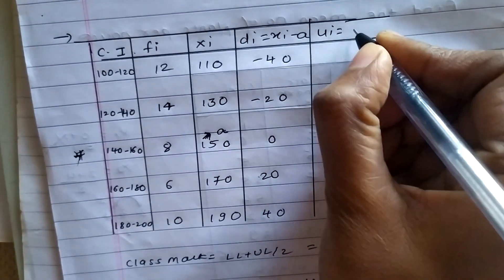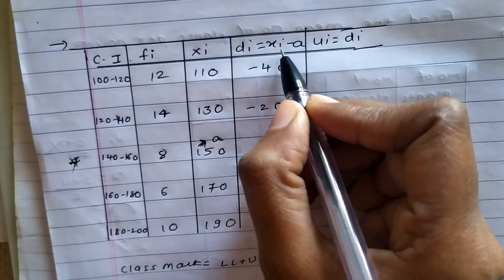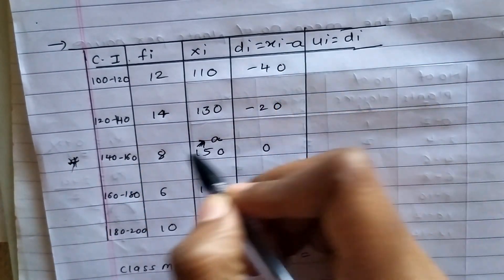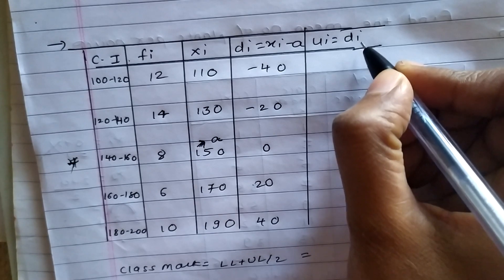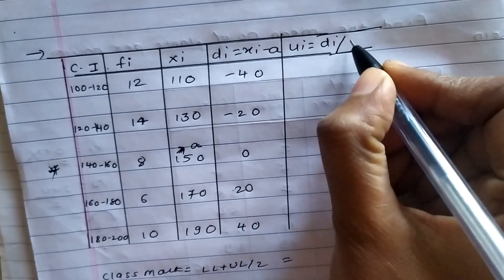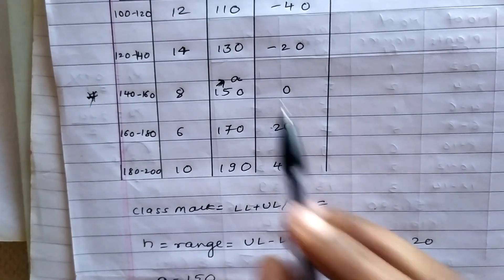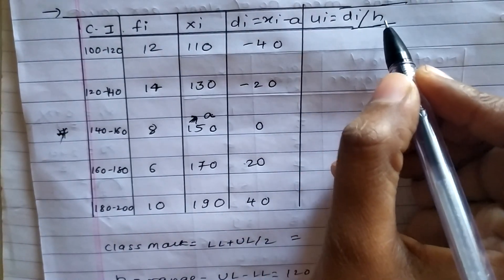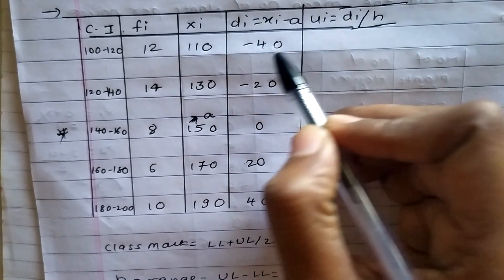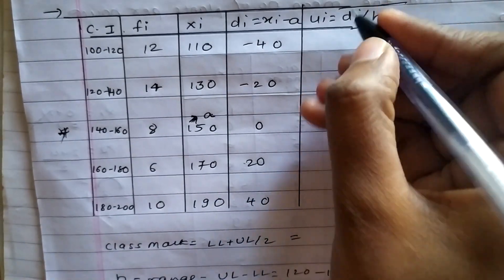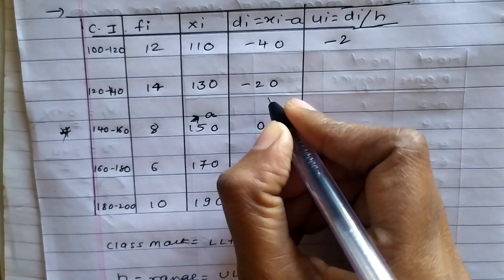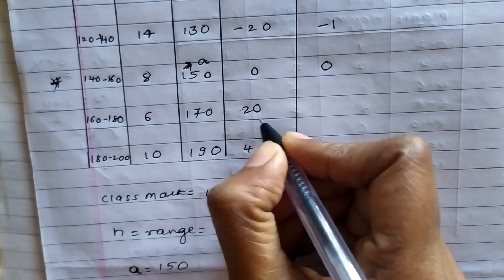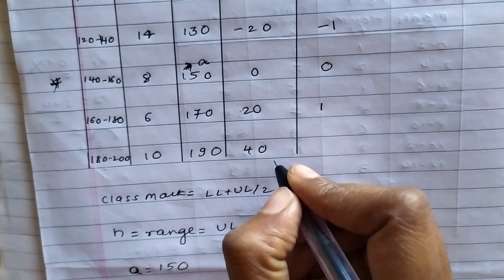UI is DI divided by H. The range H is 20. So: minus 40 divided by 20 gives minus 2; minus 20 divided by 20 gives minus 1; 0 divided by 20 gives 0; 20 divided by 20 gives 1; and 40 divided by 20 gives 2.